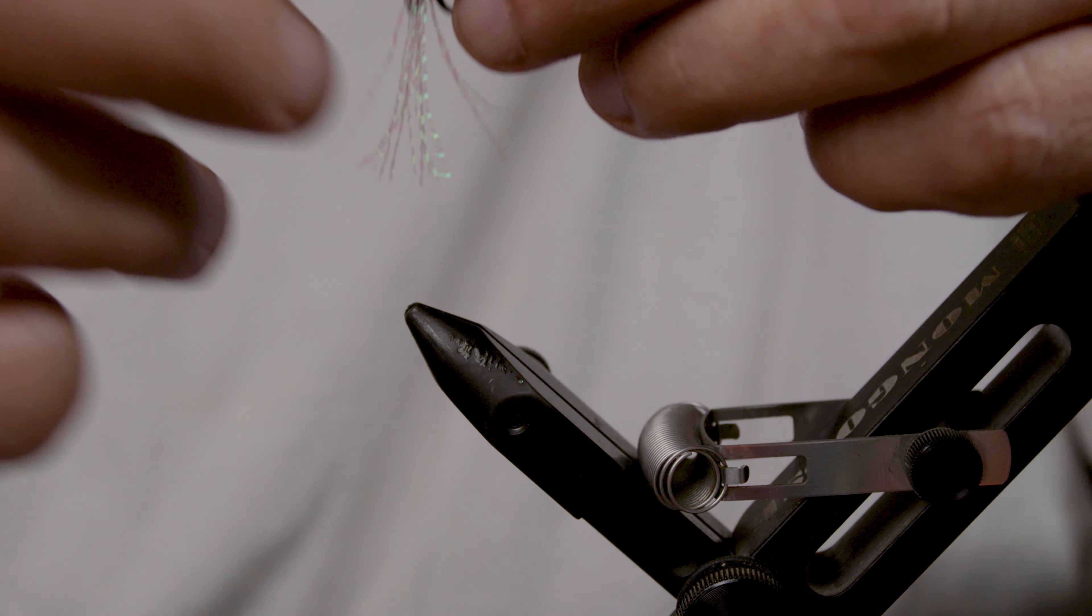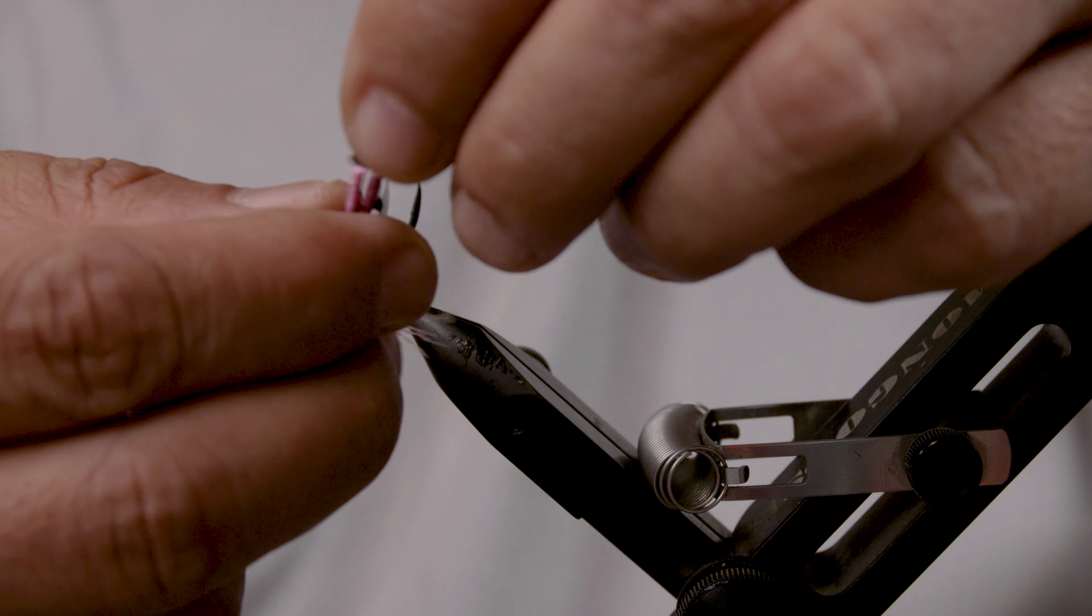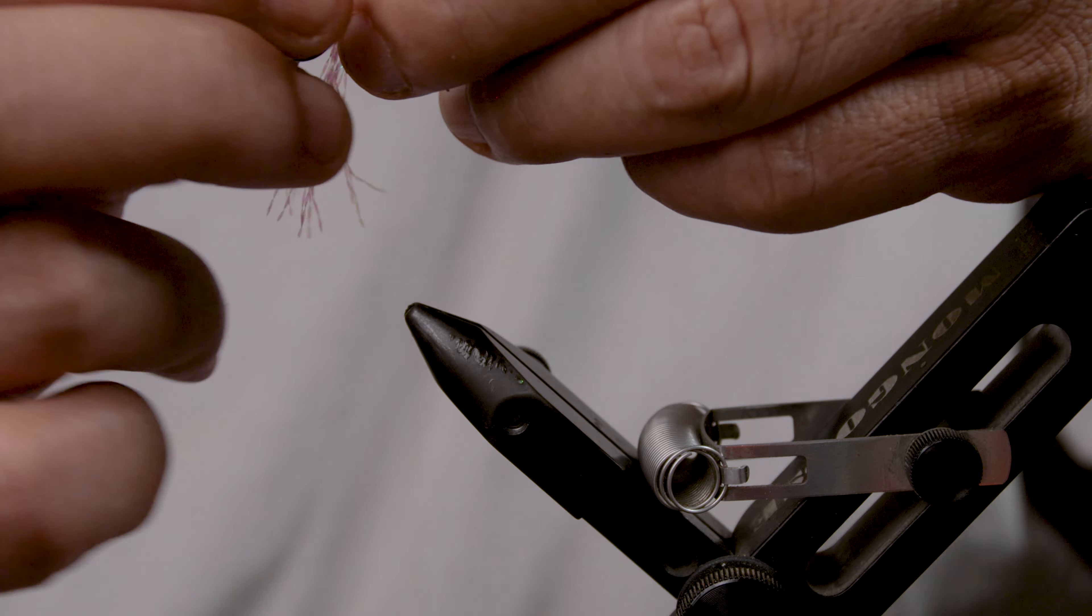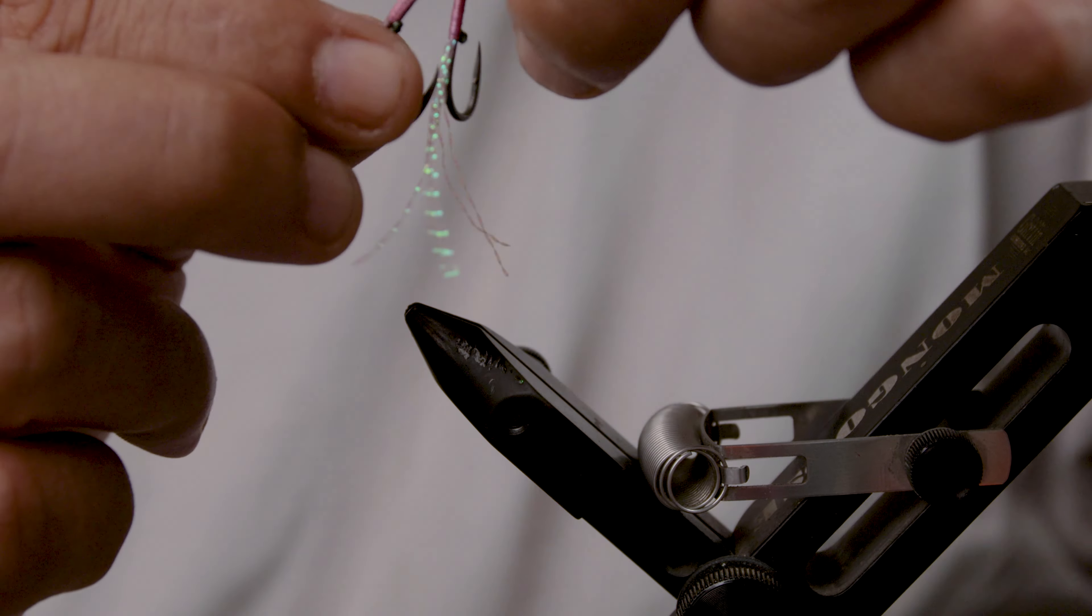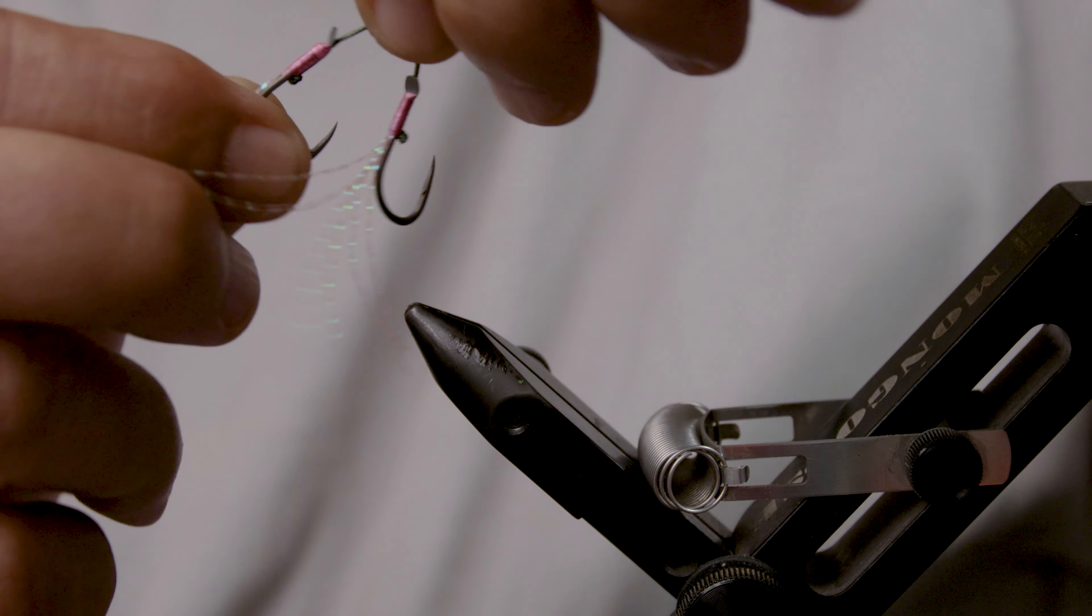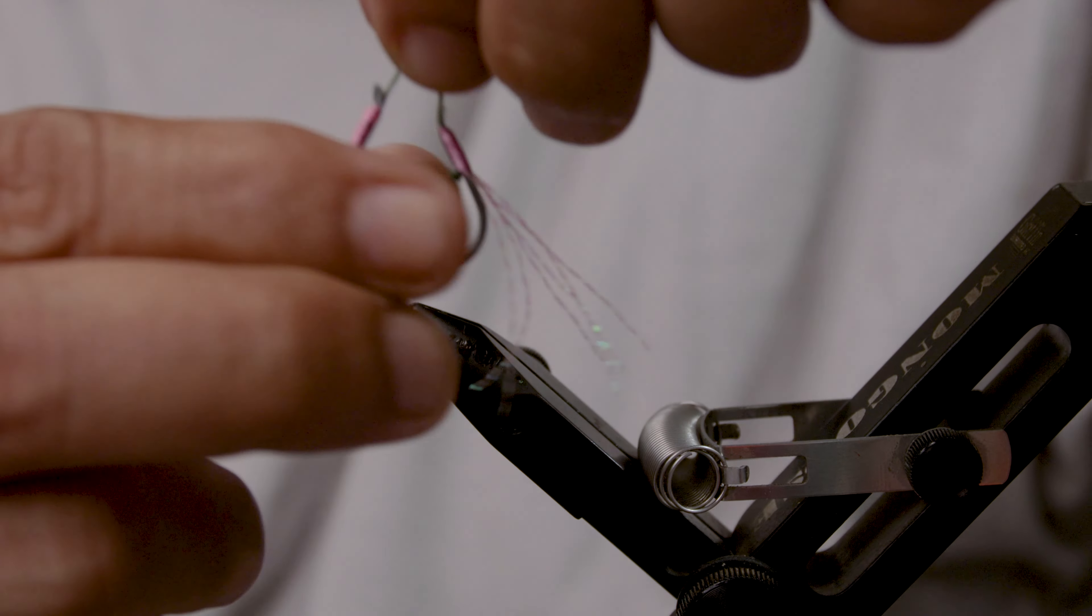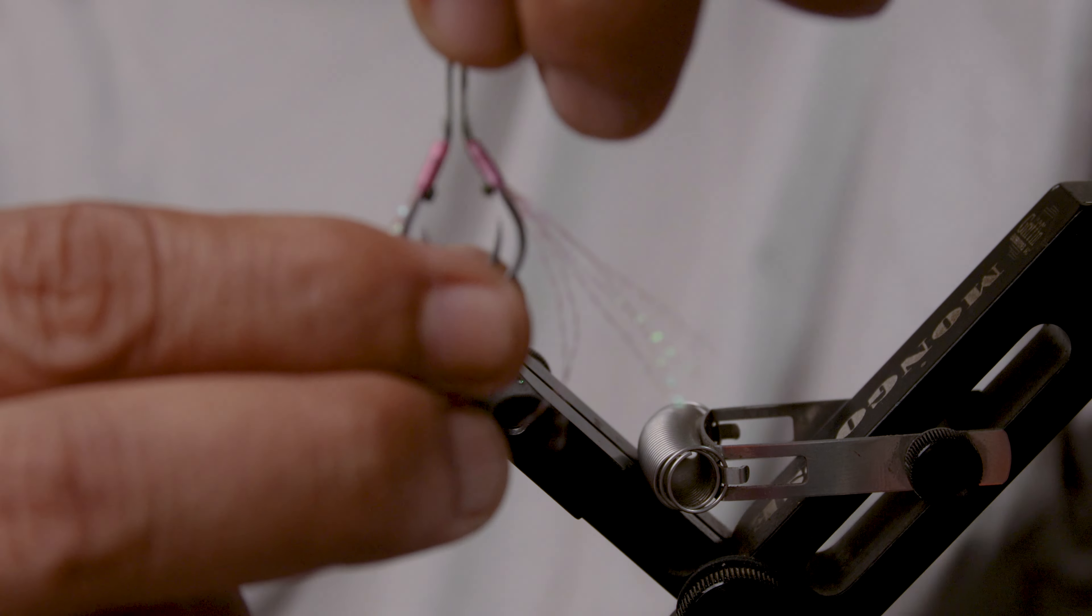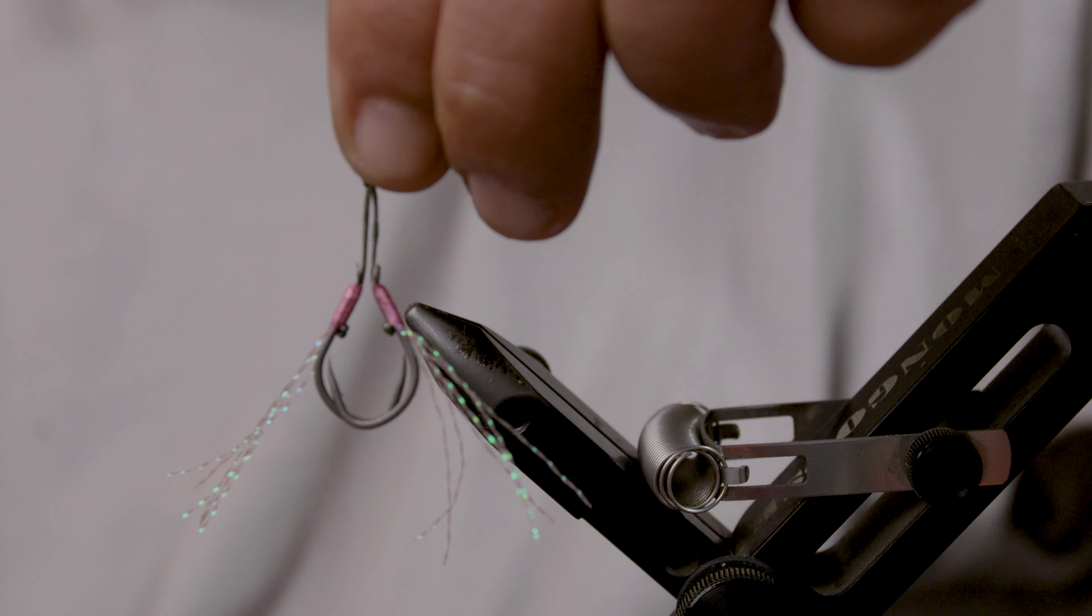All right, so that's it right there. As you can see, finished assist hook. The lengths of the flash equal, the number always equal, the wraps equal. You could get very consistent and it doesn't take too long, really.